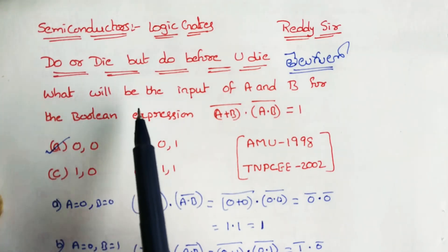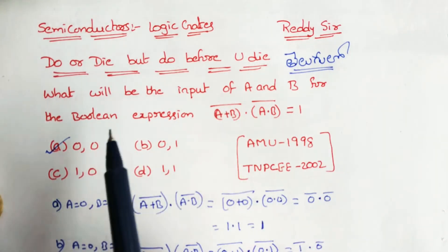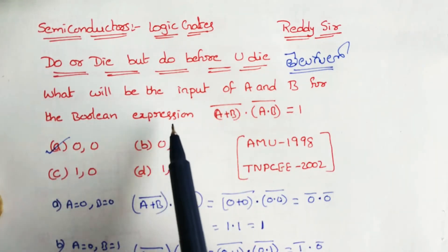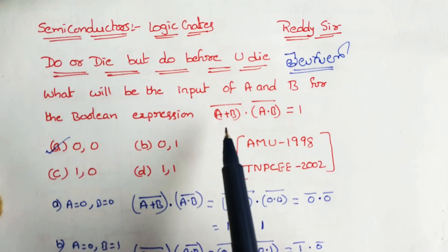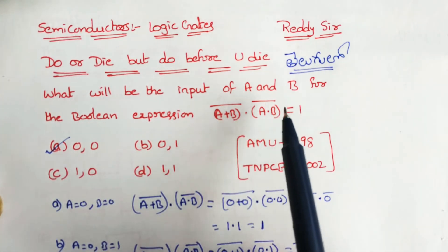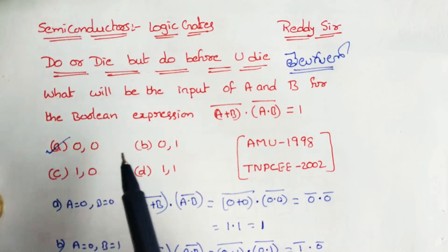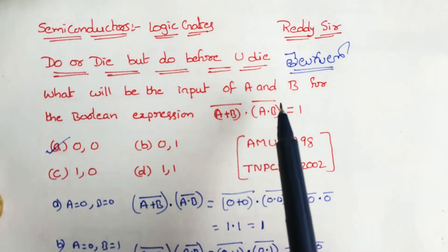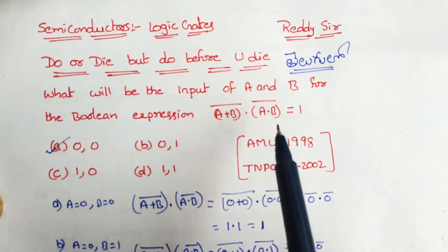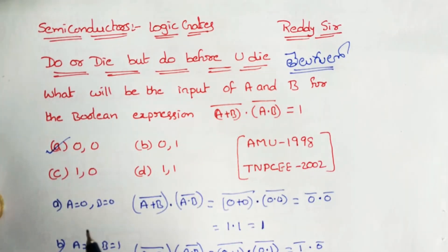What will be the input of A and B for the Boolean expression? The given expression is: (A plus B) whole bar dot A dot B whole bar is equal to 1. What will be the input of A and B for this Boolean expression?